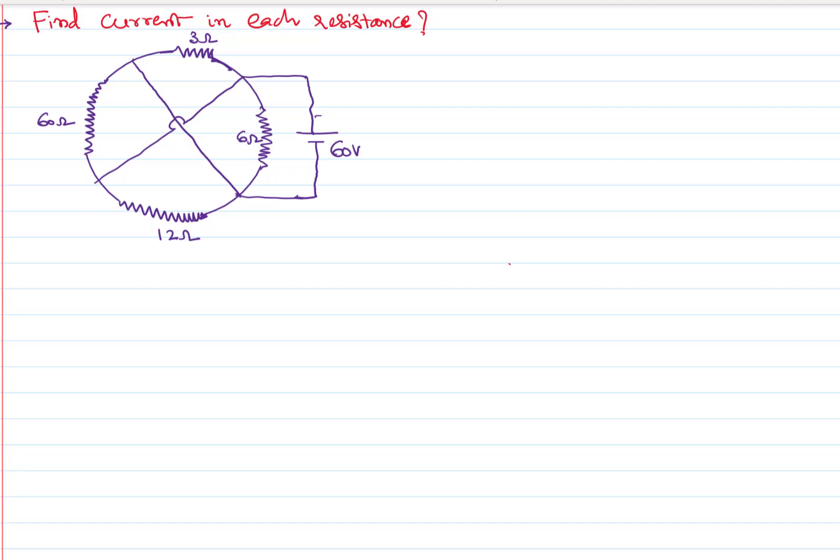In this problem, we would like to find the effective current across each of the resistors. There are many resistors in the problem: this is 3 ohms, this is 6 ohms, this is 12 ohms, and this is 60 ohms.